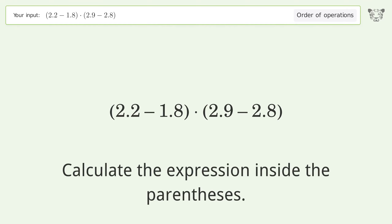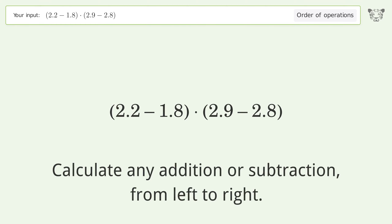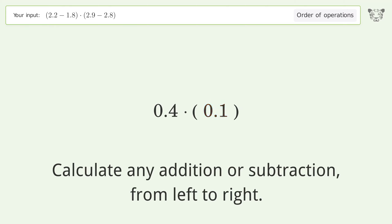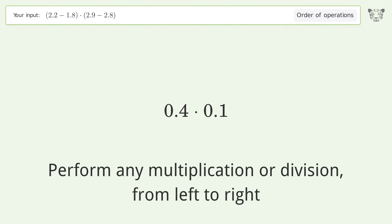Calculate the expression inside the parentheses. Calculate any addition or subtraction from left to right: 2.2 minus 1.8 equals 0.4. Then, 2.9 minus 2.8 equals 0.1. Perform any multiplication or division from left to right: 0.4 times 0.1 equals 0.04.